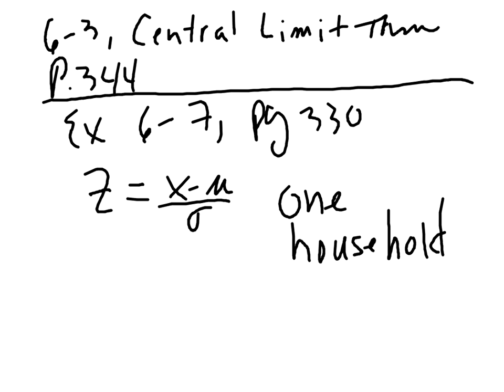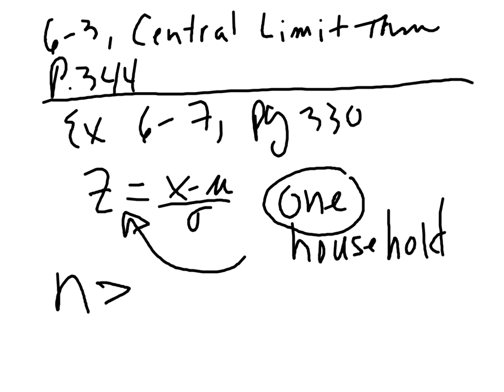The operative word in that question is 'one household.' For one household, we find the Z value — they give us the random variable X, a mean, and a standard deviation. We found the Z value for those questions and converted it into an area, and then used the area to give us a percent or probability.